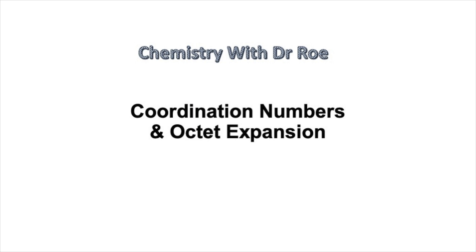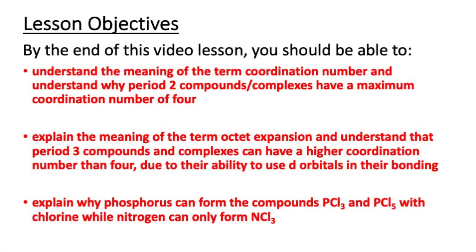Welcome to our latest video on coordination numbers and octet expansion. This video is suitable for A-level students. By the end of this video lesson, you should understand the meaning of the term coordination number and understand why period 2 compounds and complexes have a maximum coordination number of 4. You should also be able to explain the meaning of the term octet expansion and understand that period 3 compounds and complexes can have a higher coordination number than 4 due to their ability to use d-orbitals in their bonding.